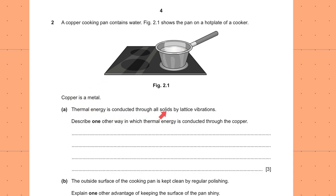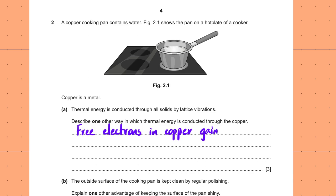Describe one other way in which thermal energy is conducted through copper — and you know this is what makes copper a good conductor of electricity. We refer to free electron movement. Free electrons in copper gain kinetic energy when heated. Since they are free and not restricted like lattice particles, they can gain the thermal energy and then move to the colder ends.